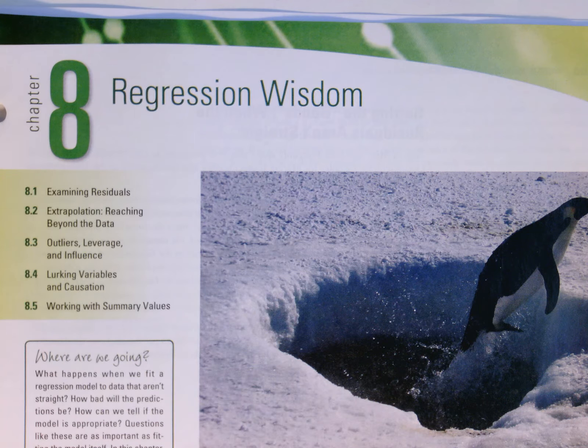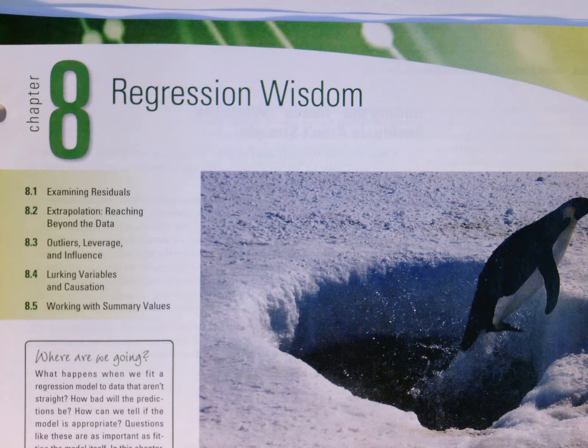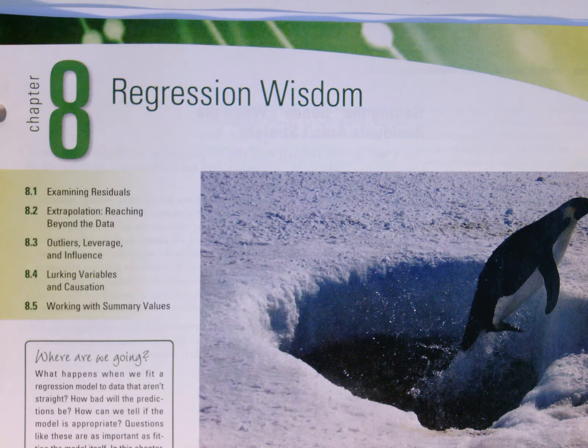Chapter 8 of SDM 4 opens with the idea that we need to be making sure that our models fit. We need to be using judgment. That aspect of statistical thinking is critically important, particularly when we think about fitting regression models.